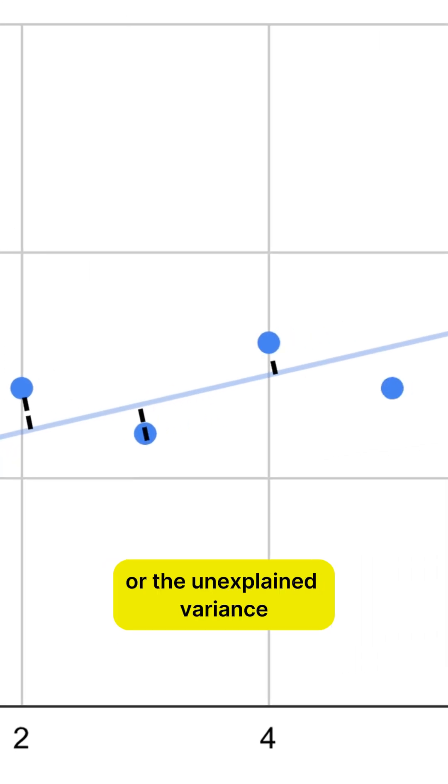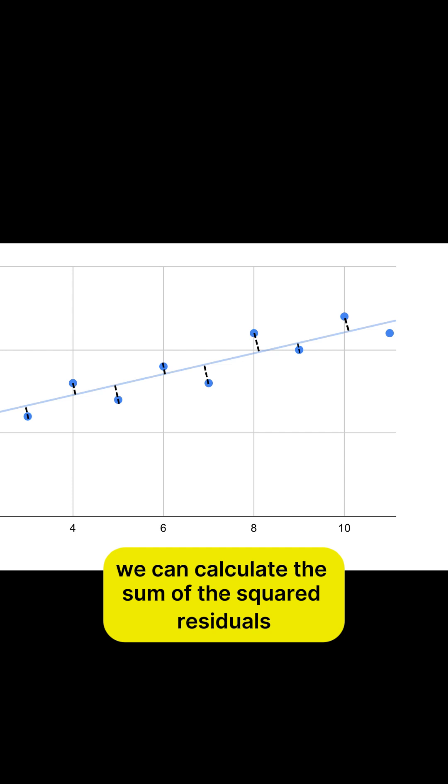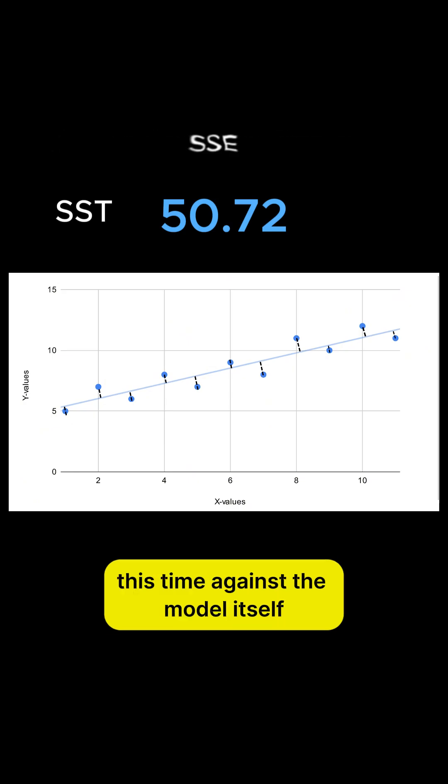These deviations are the noise, or the unexplained variance, caused by some random error. We can calculate the sum of the squared residuals, this time against the model itself.